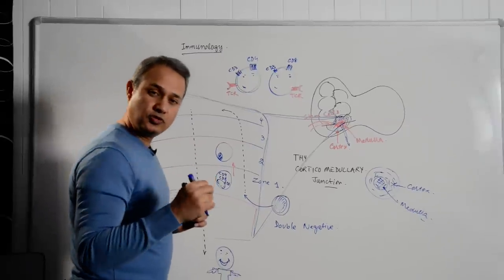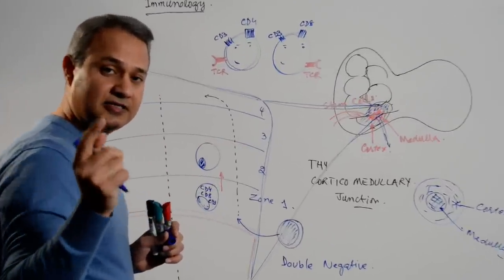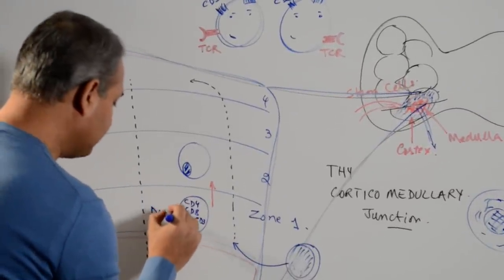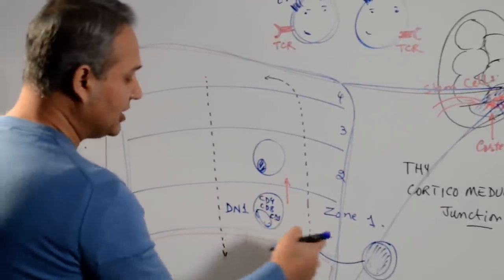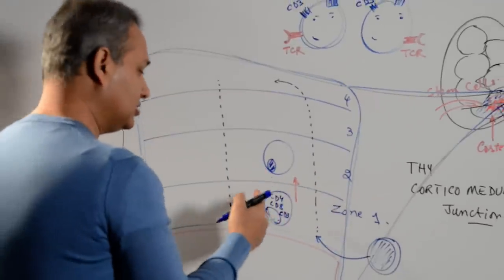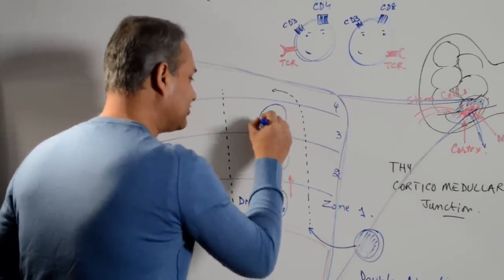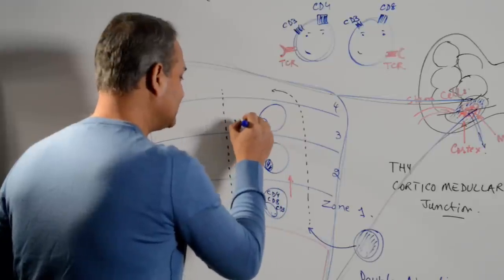When it reaches zone two, again, I'm making a small nucleus on purpose, just to show you the other things in here. When it reaches zone two, it is called double negative two cell. So here, double negative one. So zone one, double negative one. Zone two, double negative two. Zone three will be double negative three. So I just remember it that way.